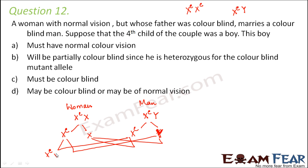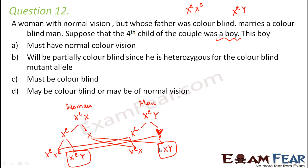The possible children would be: X^C X^C (a color blind female), X^C Y (a color blind male), X^C X (an unaffected carrier female), and XY (a normal male). Looking at the boys specifically, there is a color blind boy and a normal boy. That means there is a possibility of a normal boy and also a possibility of a color blind boy. Therefore, the fourth child, being a boy, may be color blind or may be of normal vision.